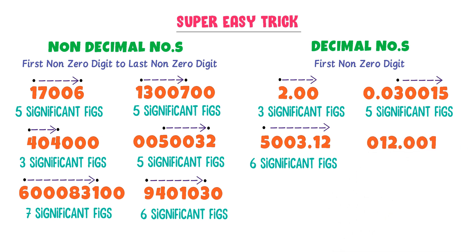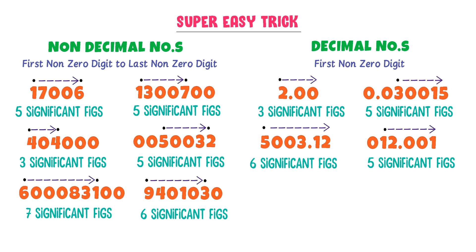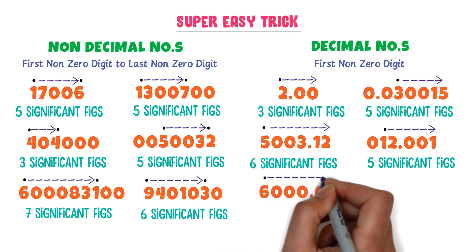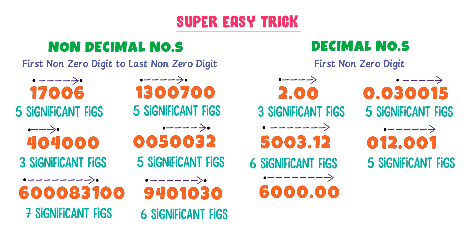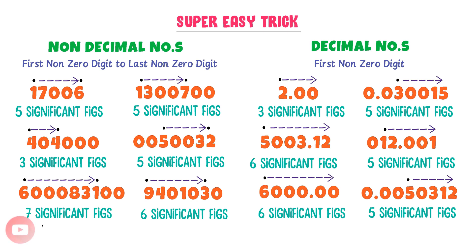Consider another decimal number where the first non-zero digit is 1. Go from 1 — 1, 2, 3, 4, 5 — there are five significant figures. Next, a number where the first non-zero digit is 6. Go from 6 — 1, 2, 3, 4, 5, 6 — six significant figures. Finally, a number where the first non-zero digit is 5. Go from 5 — 1, 2, 3, 4, 5 — there are five significant figures. By this way, we can easily find significant figures in any decimal number.